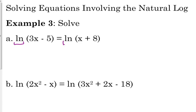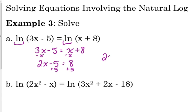When you've got the same log on both sides, you just set what's inside the logarithm equal to what's inside the other side. And then we're just solving for x. So let's subtract x from both sides. 2x minus 5 is equal to 8. Add 5 to both sides. 2x is equal to 13. Divide by 2. x is equal to 13 over 2.